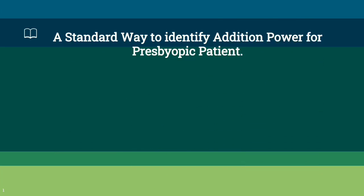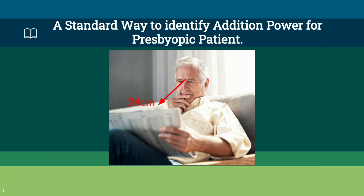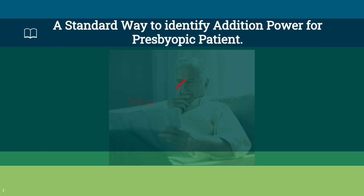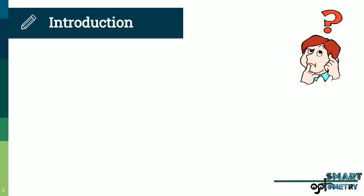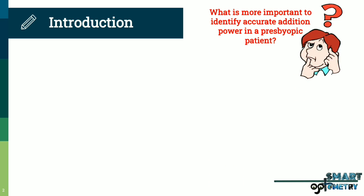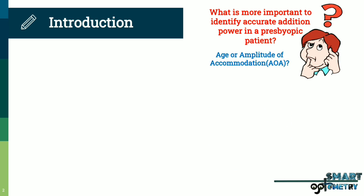Today we will discuss a standard way to identify addition power for presbyopic patients. What is more important to identify accurate addition power in a presbyopic patient — is it age or amplitude of accommodation? The answer is amplitude of accommodation. To identify accurate addition power for a presbyopic patient, we don't need to know about the patient's age.